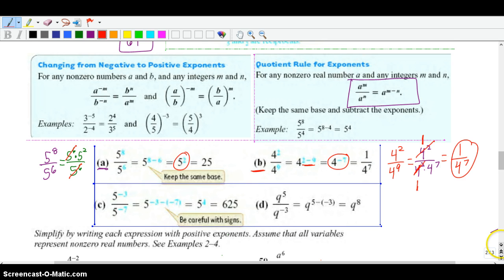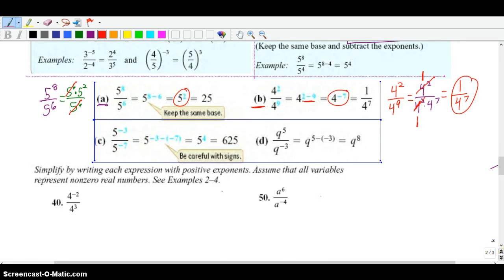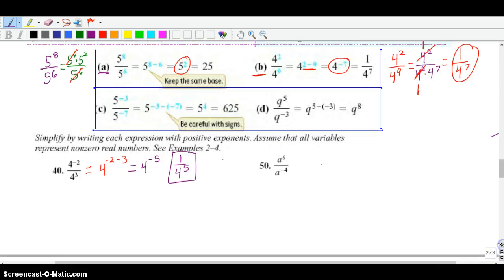Let's go ahead and try some of these down here. So right here on 40, if you want to do the quotient rule, that's fine. We can do that, and then we can look at it a little differently if you want. So this would become 4 to the negative 2 minus 3, which then becomes 4 to the negative 5th power. And then last but not least, you have to take the reciprocal to make that exponent positive. And there you go. So that's one way of looking at it, and that's fine.